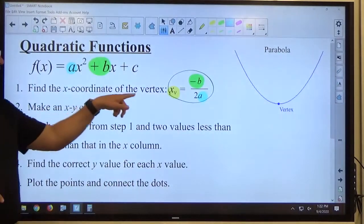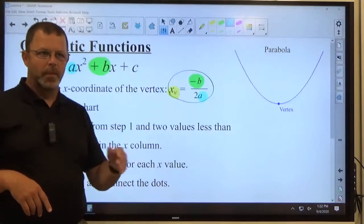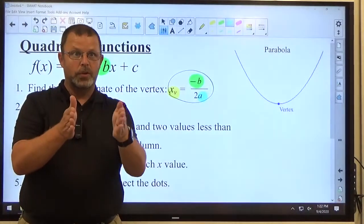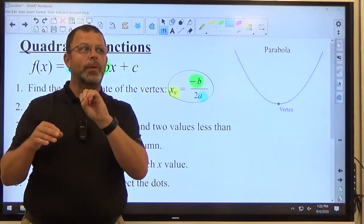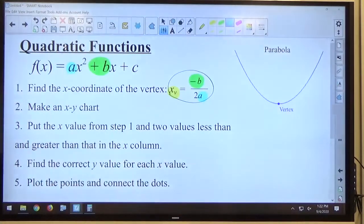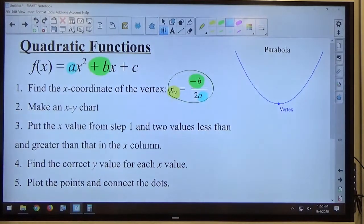If we get a decimal, let's say x sub v is equal to 0.3. 0.3 bigger is 1, 2, less than 0, negative 1. 0.3 has to be picked, but the rest of the numbers have to still pick integers. Alright? Integers are easier to evaluate.